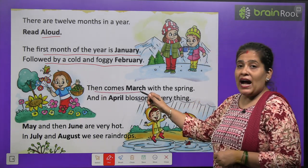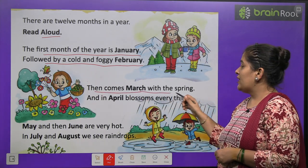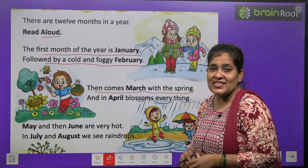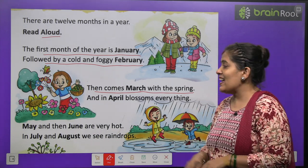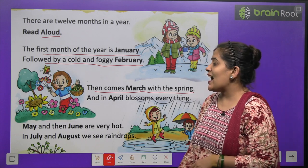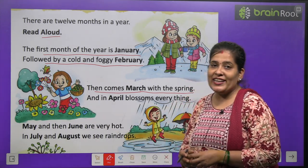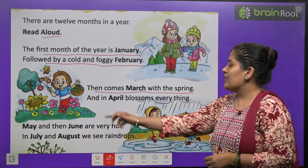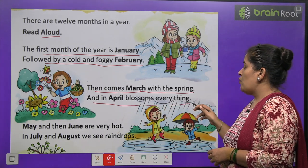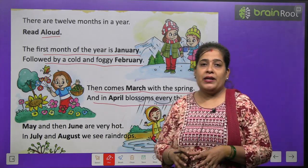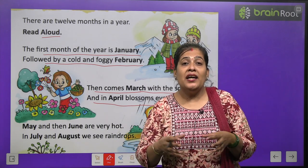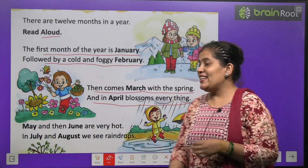Then comes March with the spring. Aur uske baad kaun sa month aata hai? March ka month aata hai. Kiske saath? Spring season ke saath. Achhe achhe phool khilte hain. And in the month of April, blossom everything. Aur April ke mahine mein kya hota hai? Saari cheezein khil uthti hain.